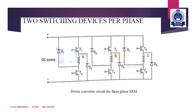The phase windings are connected to the DC source through these devices, depending on the position of the rotor of the switched reluctance motor, which is detected by an appropriate position sensor and fed back through a signal conditioner. The phase windings are excited by turning on the static devices. For example, T1 and T2 are turned on for energizing phase A. These devices are turned off for demagnetizing the phase, and the stored energy is fed back to the supply through the freewheeling diodes.